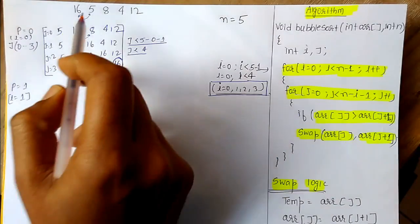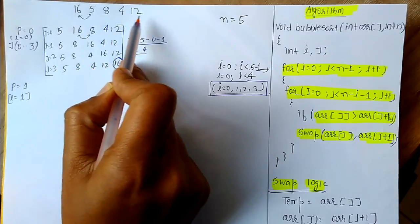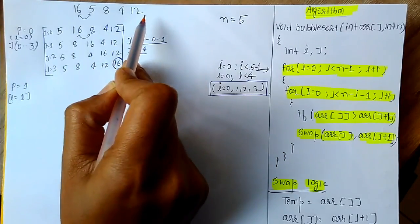Now let us go through an example so that we can easily understand how this algorithm works. Let the unsorted array be: 16, 5, 8, 4, 12. We have to sort this.